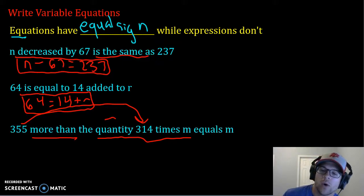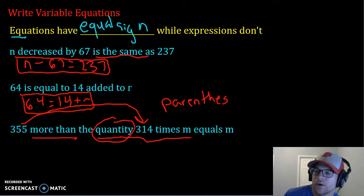Now the word quantity is another word to say that you are going to be putting parentheses around the terms that are described after the word quantity. So the quantity of 314 times M, this whole thing is going to be written in parentheses.